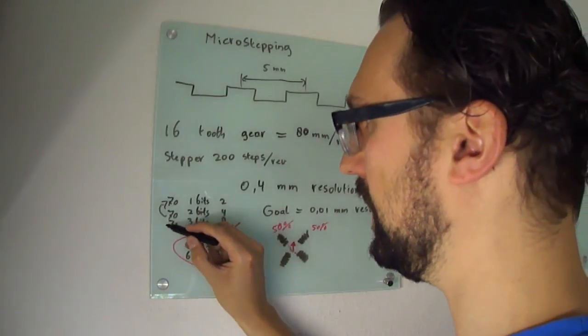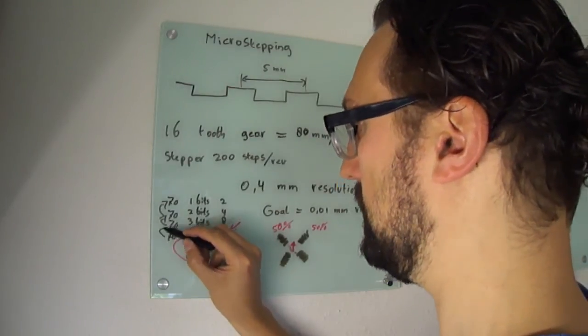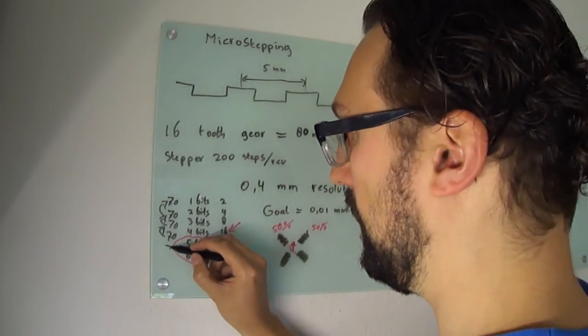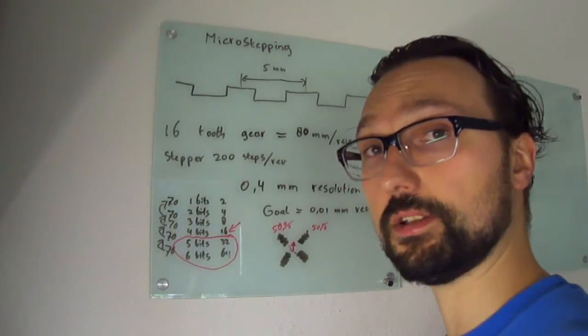So it's 70 percent of 70 percent of 70 percent of 70 percent. So that sucks right? So if I'm losing all the power with the 70 percent of 70 percent, how do I compensate for that? Well basically I use a stronger motor and in fact I want to use two motors.